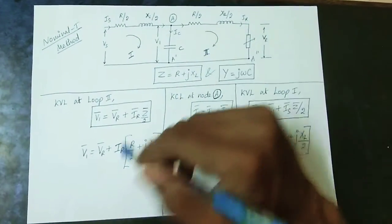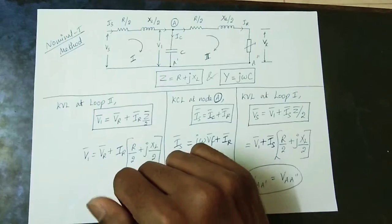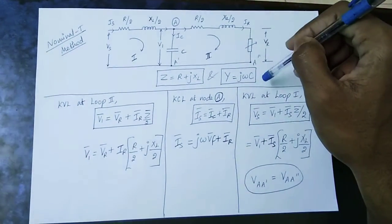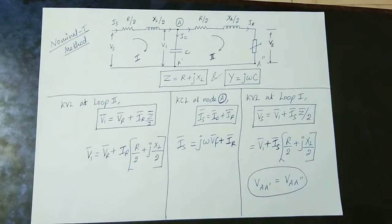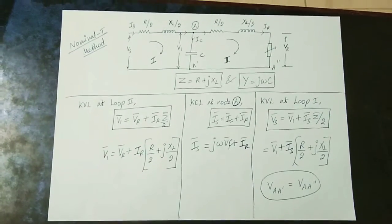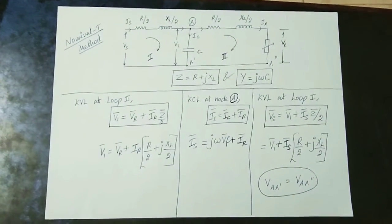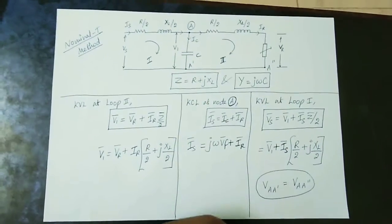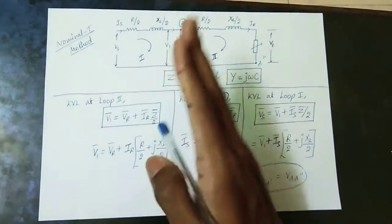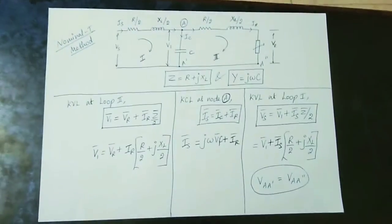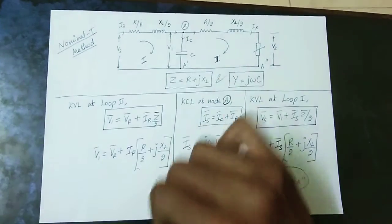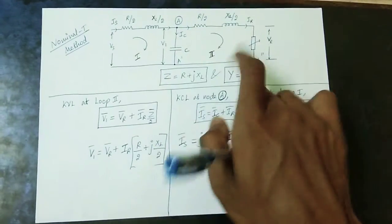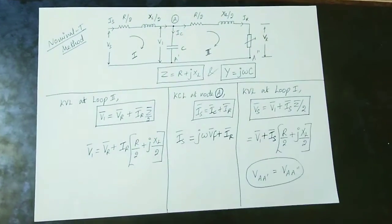We identify loop 1 and loop 2, and apply KVL to each. The other side has R/2 and X/2, followed by the receiving end current and receiving end voltage VR. The capacitor in the center is represented using admittance Y, where admittance is the inverse of impedance: Y = 1/Z. Since the capacitor is a shunt parameter connected in parallel, we express it as admittance. So Y = jωC.